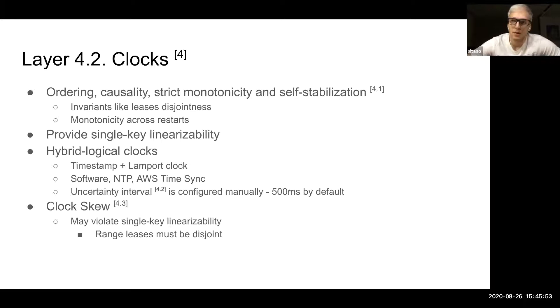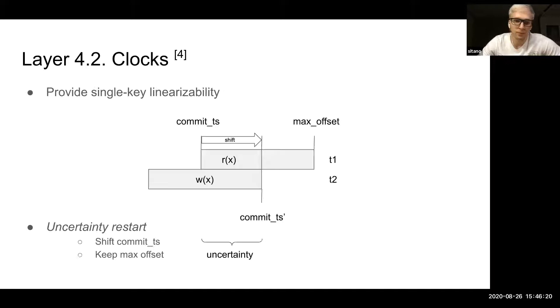Specifically, CockroachDB uses hybrid logical clocks, which is the combination of timestamps and Lamport's logical clocks. They are synchronized with software NTP servers, and uncertainty intervals are configured manually. They provide ordering causality and strict monotonicity. They also apply some mechanics to track the clock skew to ensure that serializability and linear visibility are not violated.